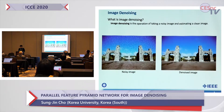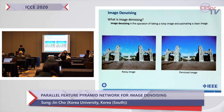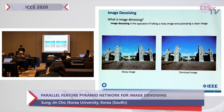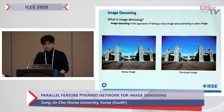Image denoising is an operation that removes noise from a noisy image. However, it is difficult to remove noise while preserving useful information in the denoising process, because noise, edge, and texture are all high frequencies.